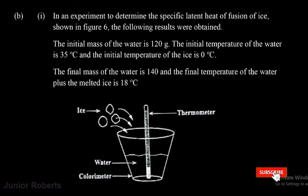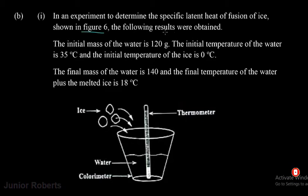In an experiment to determine the specific latent heat of fusion of ice, the following results were obtained: the initial mass of water is 120 grams, the initial temperature of the water is 35 degrees Celsius, and the initial temperature of the ice is zero degrees Celsius. The final mass of the water is 140 grams, and the final temperature of the water plus the melted ice is 18 degrees Celsius.